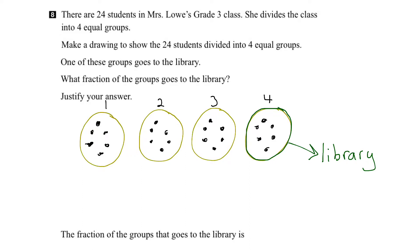So what we have to figure out is what fraction of the groups goes to the library. Well, if we have 4 groups, and 1 goes to the library, therefore 1 out of 4 groups goes to the library. So the fraction is 1 quarter.